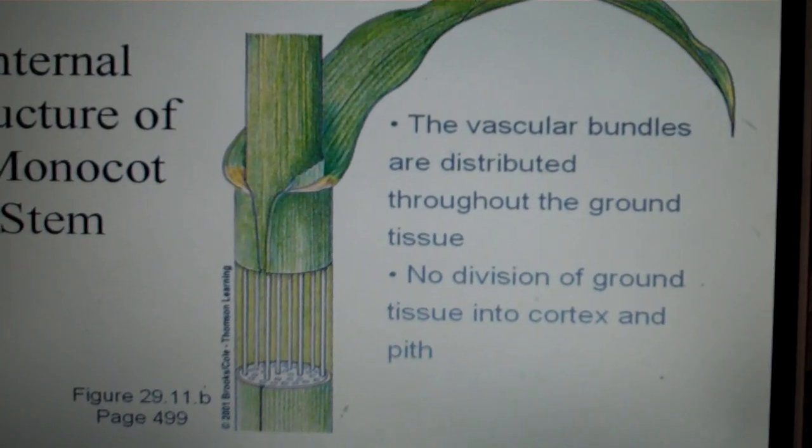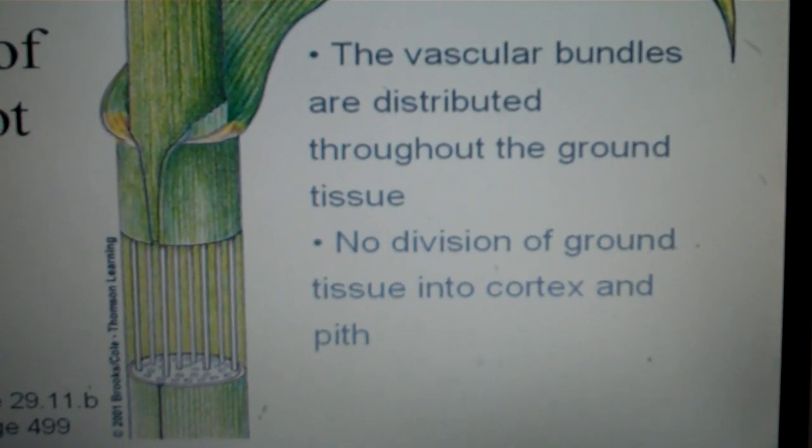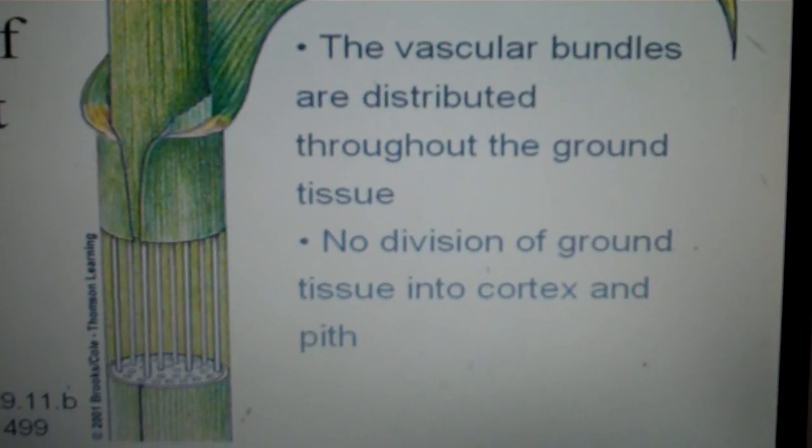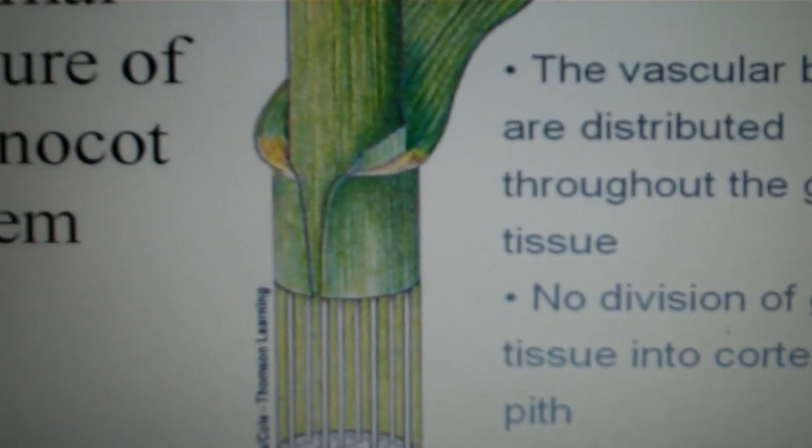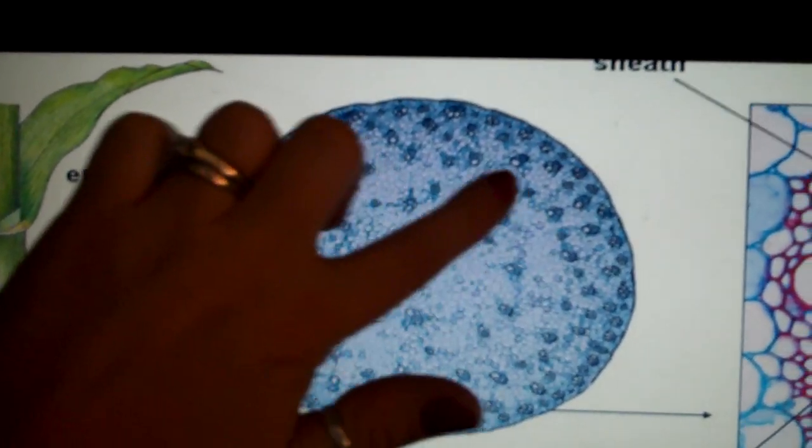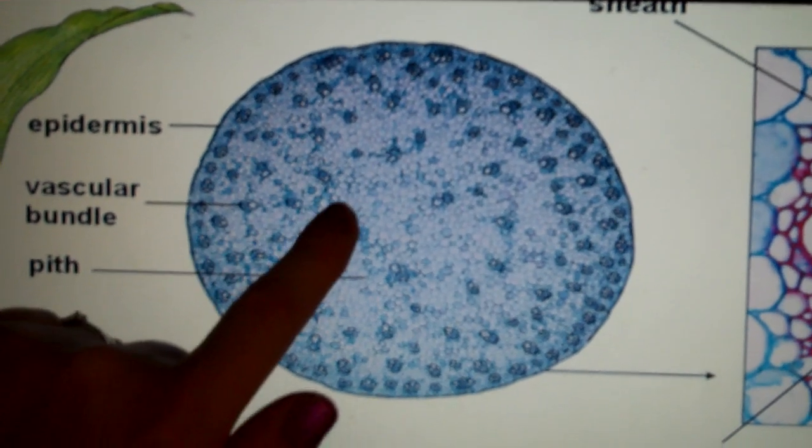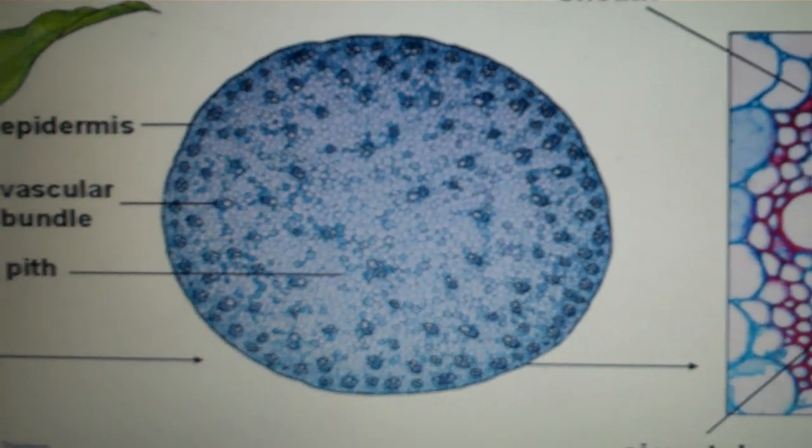A monocot stem is different. There are vascular bundles, however they are not arranged in a circular pattern. They are spread throughout the entire stem. You see here, there is no ring like we saw in the dicot. The vascular bundles are randomly spread throughout the plant.